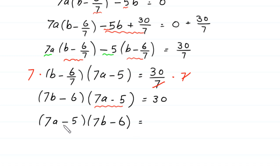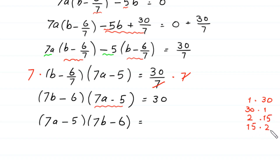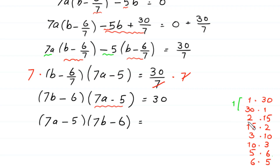At the left side we have 2 factors, and 30 can be factorized as: 1 times 30, 30 times 1, 2 times 15, 15 times 2, 3 times 10, 10 times 3, and 5 times 6, 6 times 5. So we have 4 cases: Case 1 is 1 times 30 and 30 times 1; Case 2 is 2 times 15 and 15 times 2; Case 3 is 3 times 10 and 10 times 3; and Case 4 is 5 times 6 and 6 times 5.